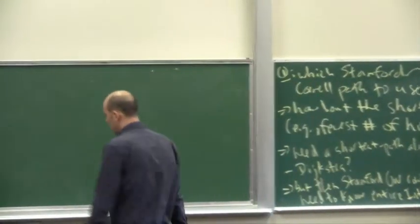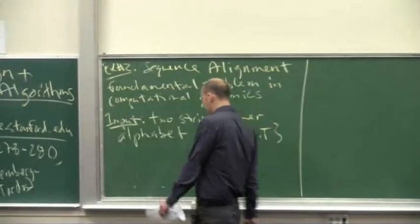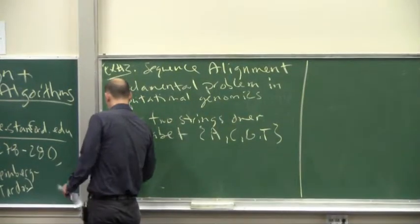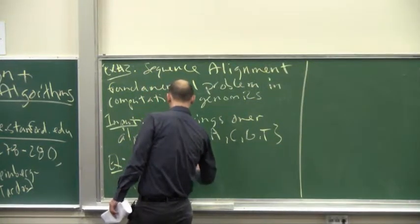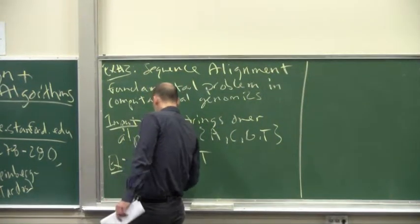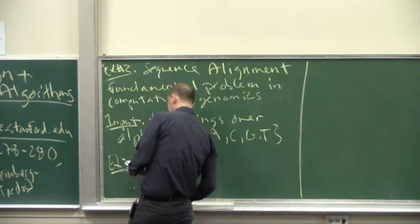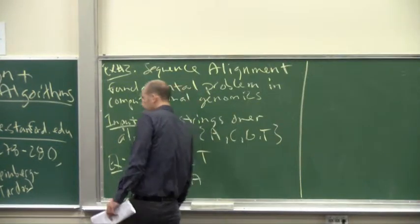So for example, perhaps the input to this algorithmic problem would be the strings AGGCT. That would be the first one. And AGGCA. That's one input you might receive.